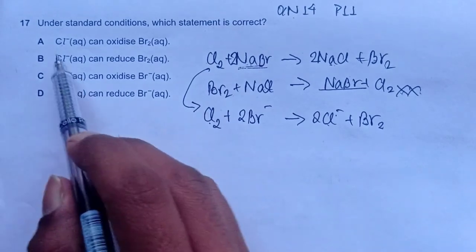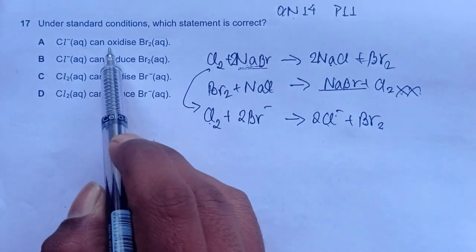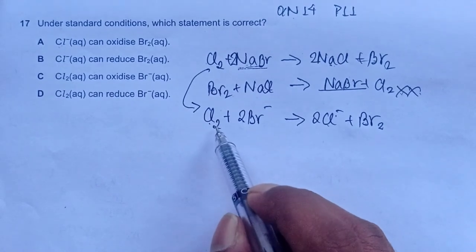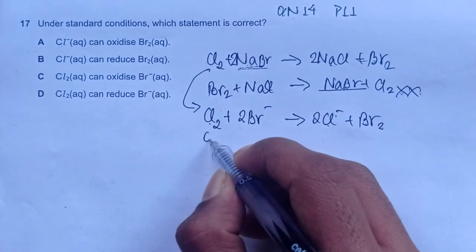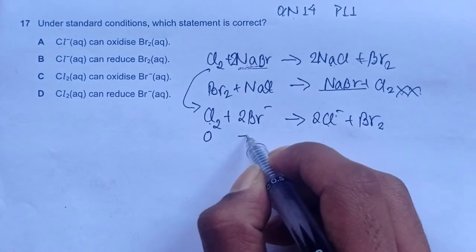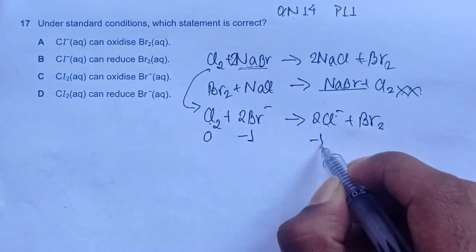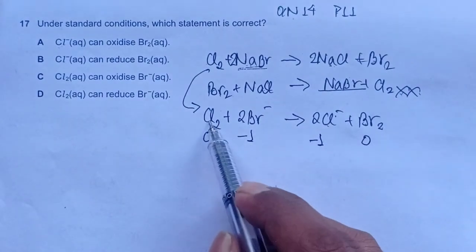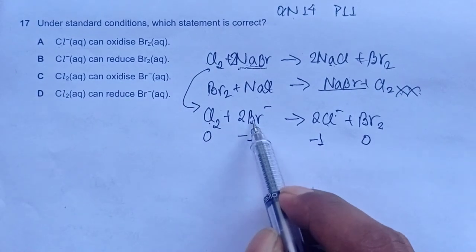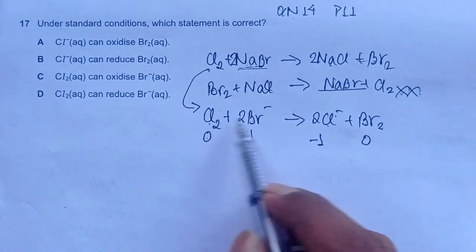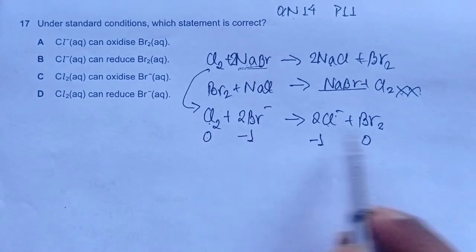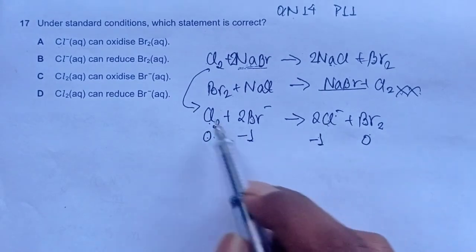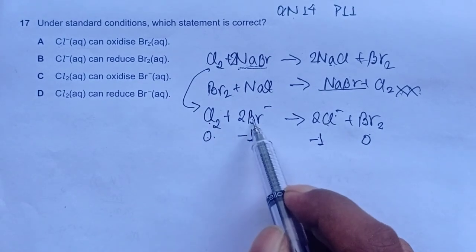Now, what we can see is, our option is Cl minus aqueous can oxidize Br2. But what is happening here is, the oxidation number of chlorine in this case is 0, bromide is minus 1, chloride is minus 1 and bromine is 0. So what is happening here is chlorine is oxidizing bromide ions because bromide ion goes from minus 1 to 0 and chlorine goes from 0 to minus 1. So chlorine has been reduced and it has oxidized the bromide ions.